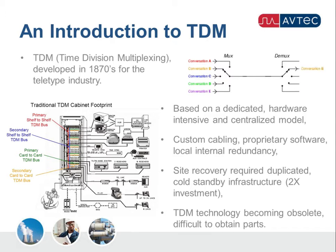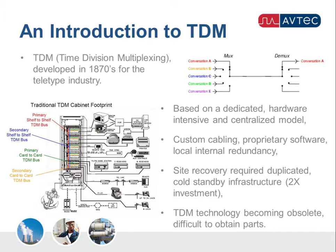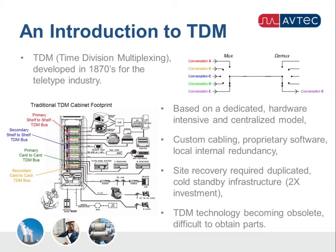Another component of TDM technology was that since the infrastructure was a centralized core, in a disaster recovery mode one required duplication of that infrastructure. Being centralized, everything was contained in one cabinet. When you look at multiple locations, it required high-level connectivity between them, typically dedicated T1 circuits or some means of connecting these systems together. These technologies typically become more and more obsolete over time and are being phased out.